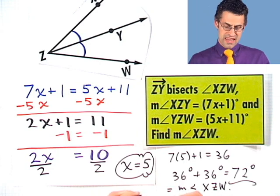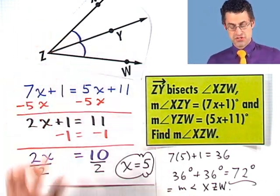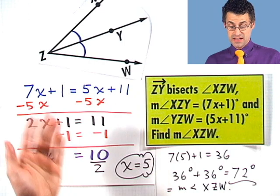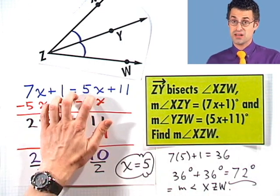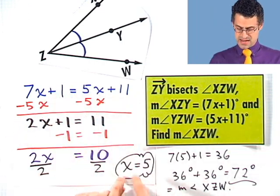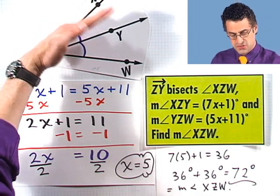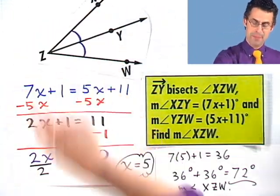So if you know something about an angle bisector, that gives you lots of information, which quite often can lead to an algebraic equation, which can then resolve in finding exactly what you want, in this case, sweeping out the measure of that big angle. Congratulations, and I'll see you soon.